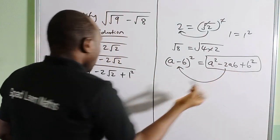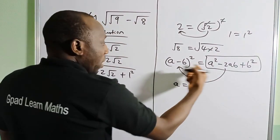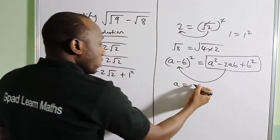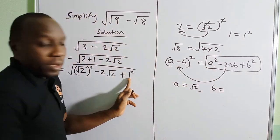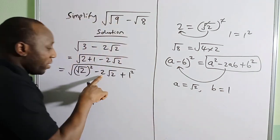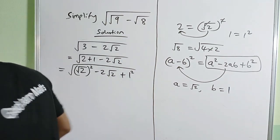But this is 2ab. We can already conclude that a is √2. Now what about b? b is 1. But look at what I have in the middle term: 2√2.